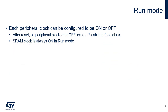In run mode, the CPU is clocked and the program can be executed from flash or SRAM memory. The power consumption in run mode can be reduced through selecting a system clock with lower frequency, scaling down the system clock frequency, disabling unused peripherals, and/or stopping their clocks. Each peripheral clock can be configured to be on or off in run and low power run modes. By default, all peripheral clocks are off except the flash interface clock.